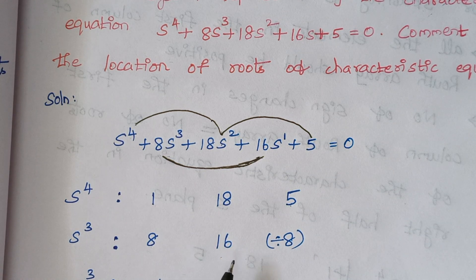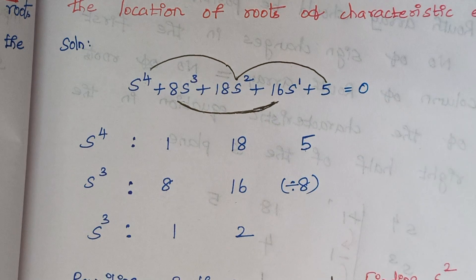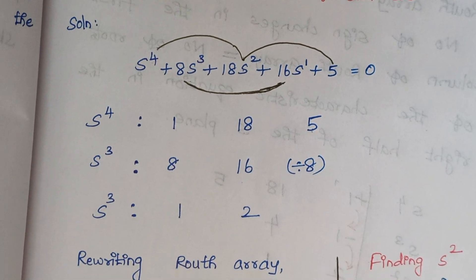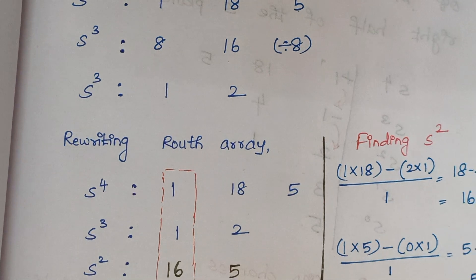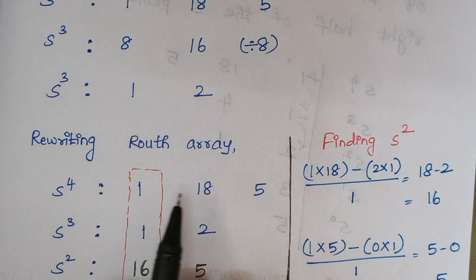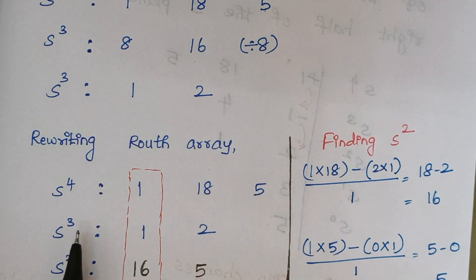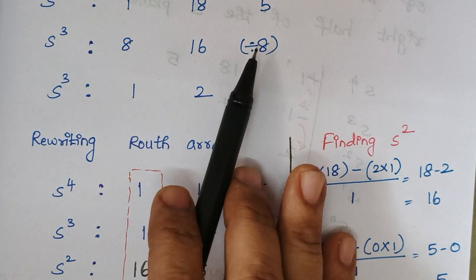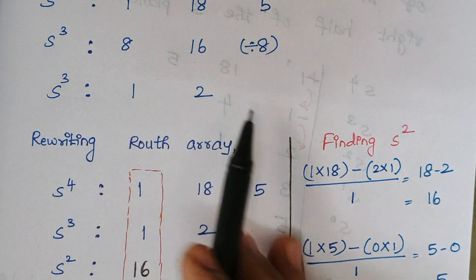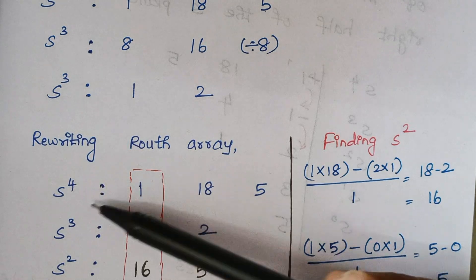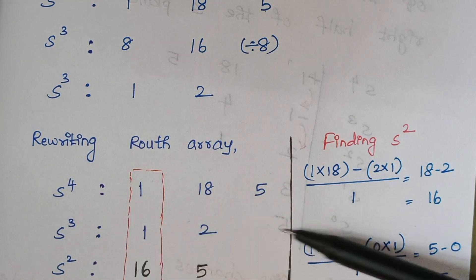Since both terms in the S³ row — 8 and 16 — are divisible by 8, you can divide by 8, giving 1 and 2. So rewriting the Routh array: the S⁴ row has terms 1, 18, and 5, and the S³ row is rewritten as 1 and 2.